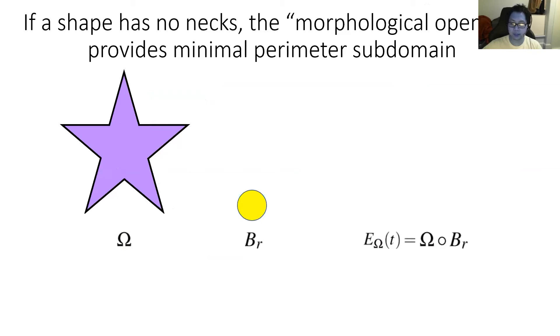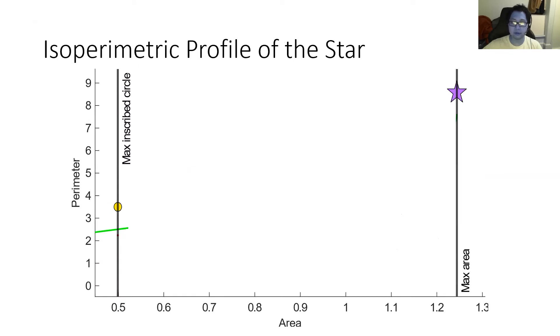This result says that if a shape has no necks, like a star, then the morphological opening with a ball is the minimal perimeter subdomain. The morphological opening with a ball of radius r is the union of all balls of that radius that fit inside the domain. This is depicted by the blobby yellow pentagon. If the radius of the ball decreases, the morphological opening increases. So if you want to compute the isoperimetric profile of a shape with no neck, such as the star, you can just take the morphological opening of it with balls of decreasing radius, and plot their perimeters against their areas. This is the isoperimetric profile of the star.